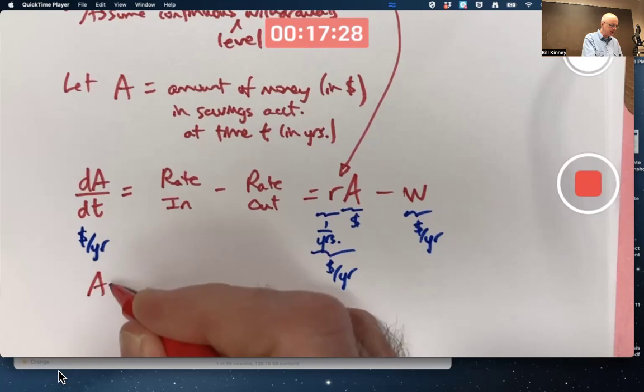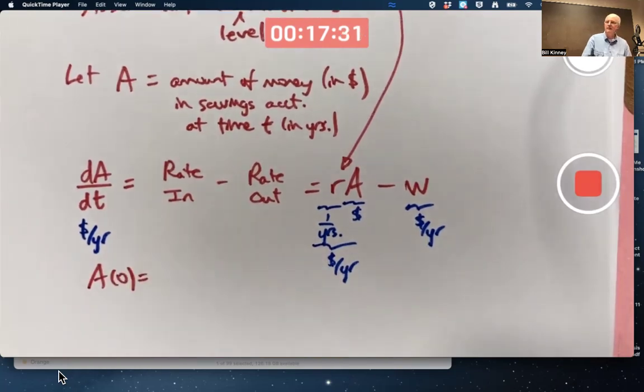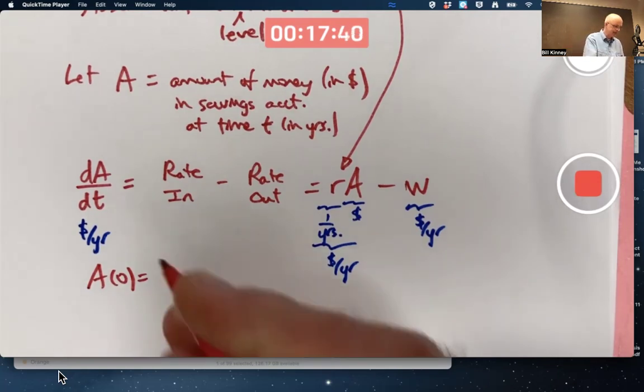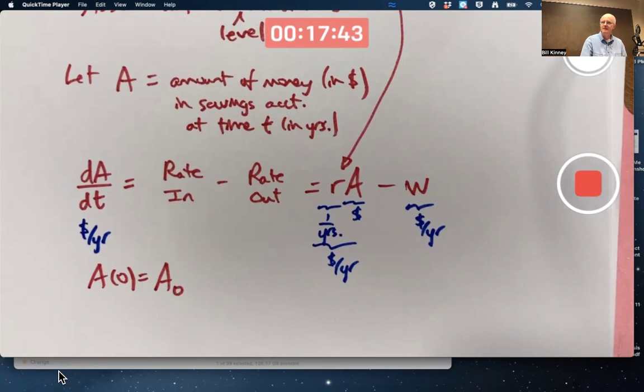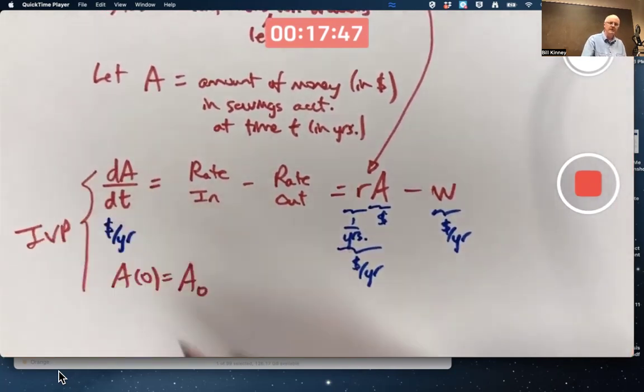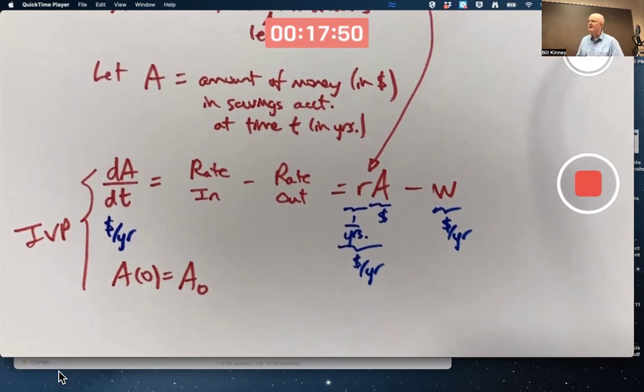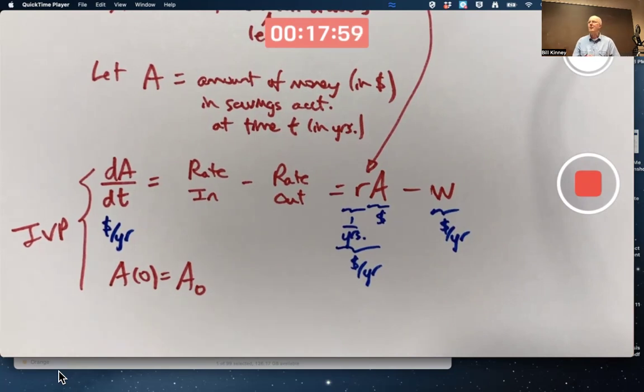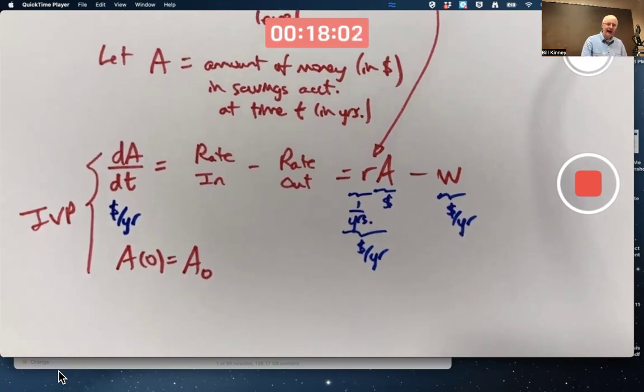What's your initial condition? Well if you have a million dollars it would be A of zero is a million. But just to give ourselves a little bit more power, problem solving power, let's not specify what it is other than calling it A naught. And there is my IVP the differential equation with the initial condition. Yes if you've got a million dollars A naught is a million. But let's see if we can solve it in this more general setting without specifying A naught. How? Separate variables.